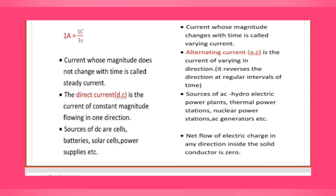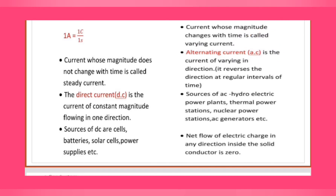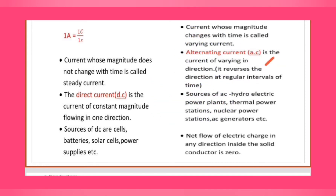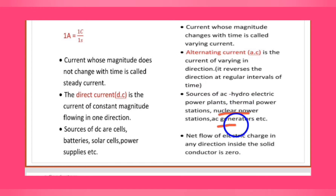Varying current is the current whose magnitude changes with time. Alternating current (AC) is the current of varying direction — it reverses its direction at regular intervals of time. Examples of sources of AC are hydroelectric power plants, thermal power stations, nuclear power plants, and AC generators.